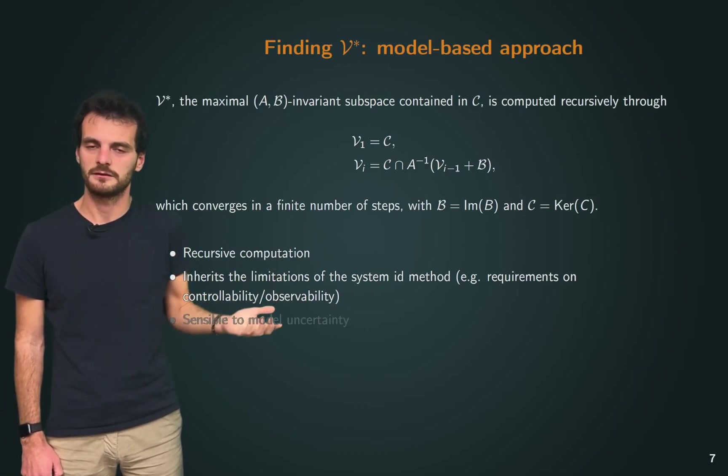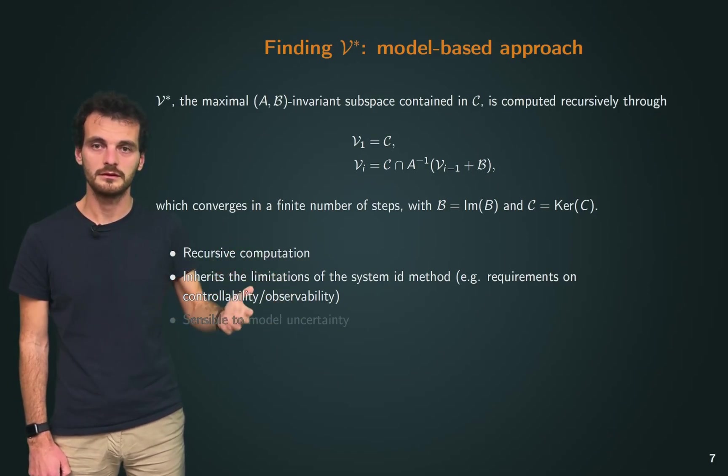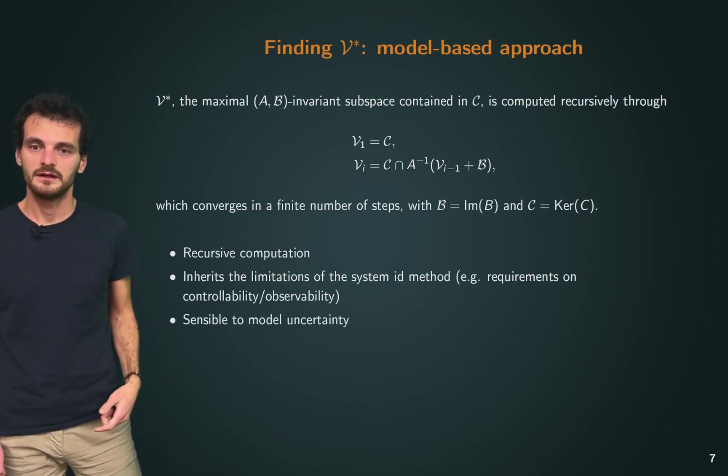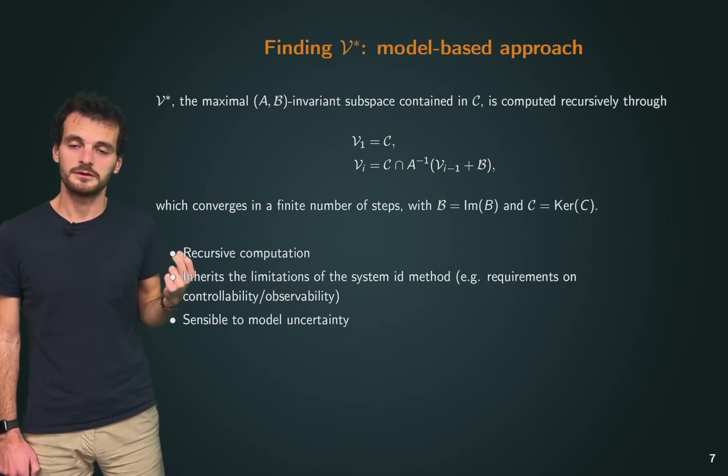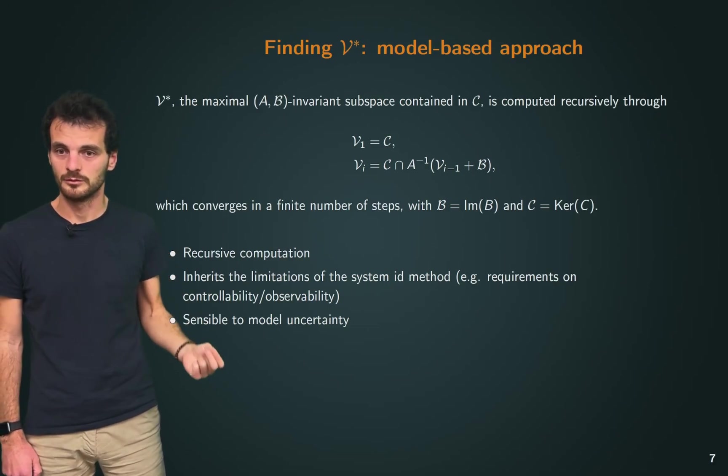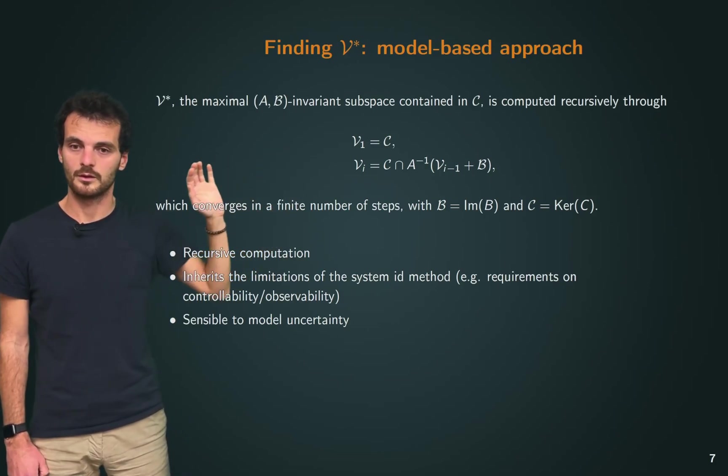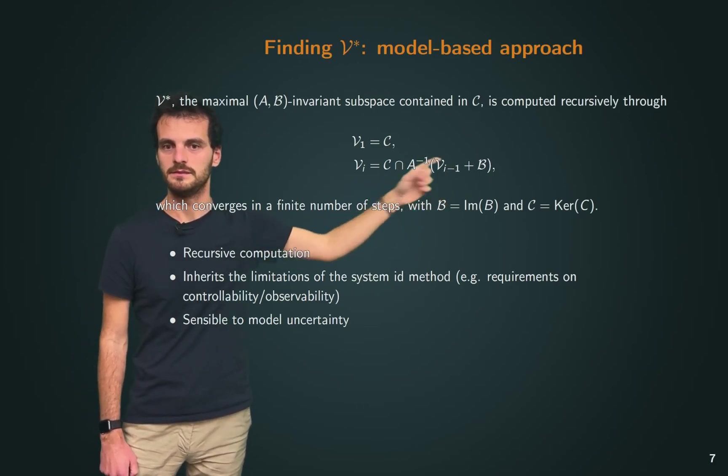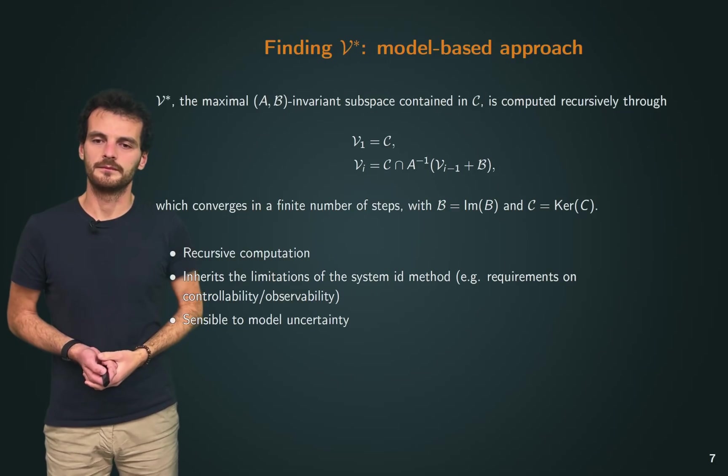It inherits the limitation of the system ID method that we might use. So if we don't have a model of the system but we want to perform system ID, then we have some assumptions depending on the system ID method that we're using. For example, some assume that the system is controllable and/or observable, which might not always be ideal for our study. Further, if the data is collected with noise, the geometric approach is, unfortunately, well known to be sensible to model uncertainty.